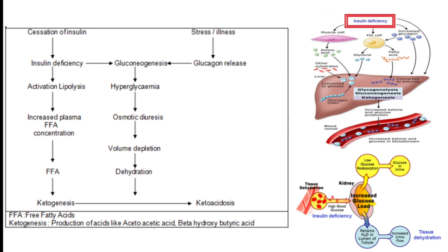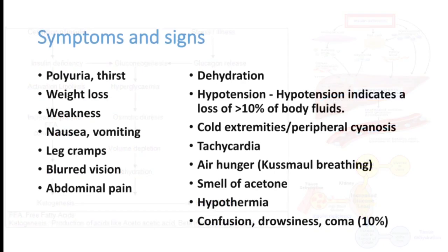Symptoms and signs of DKA: the patient can have polyuria, weight loss, weakness, nausea, vomiting, leg cramps, blurred vision, and abdominal pain. Severe dehydration findings include hypotension, cold extremities, peripheral cyanosis, and tachycardia. Air hunger — called Kussmaul's breathing — and a smell of acetone can be present. Severe hypothermia, confusion, drowsiness, and coma can also occur. Major findings are hypotension, tachycardia, and severe dehydration.